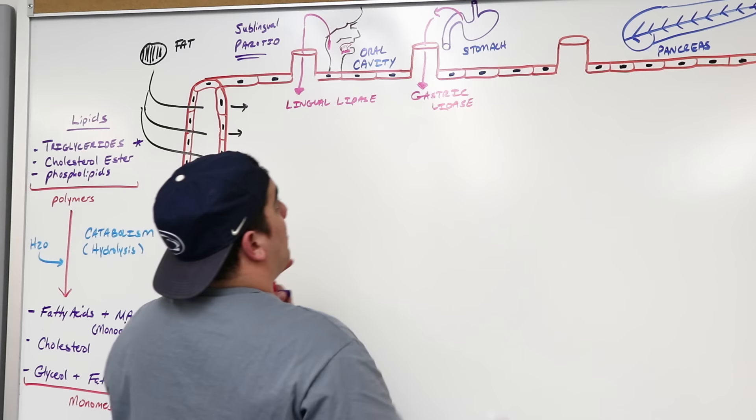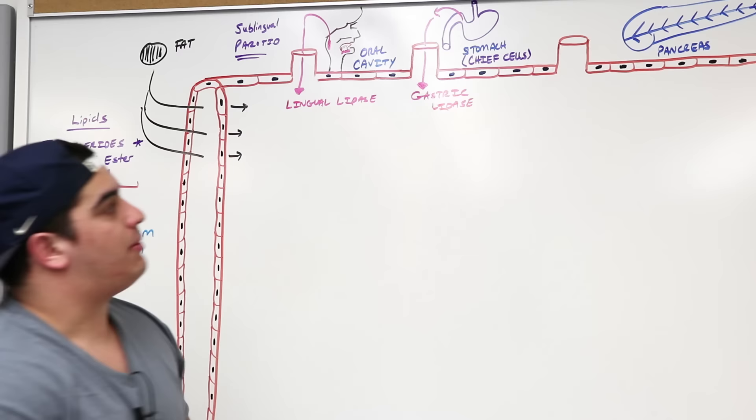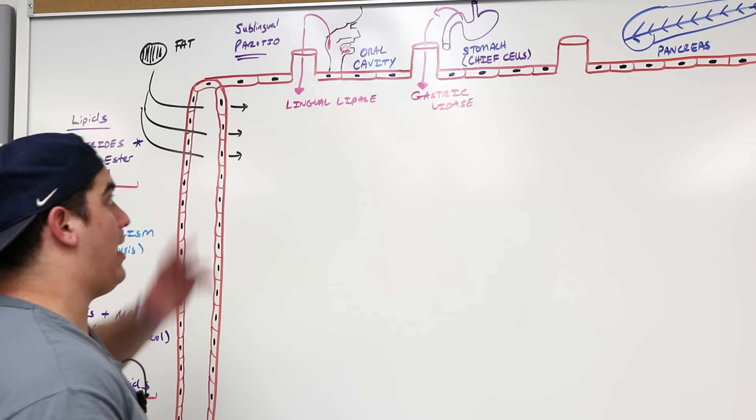In the stomach, you have specific cells called chief cells, and they secrete a chemical into this area with similar function to lingual lipase — this is called gastric lipase. From the stomach, it's coming particularly from the chief cells. The chief cells were also responsible for secreting pepsinogen, which got converted into pepsin.